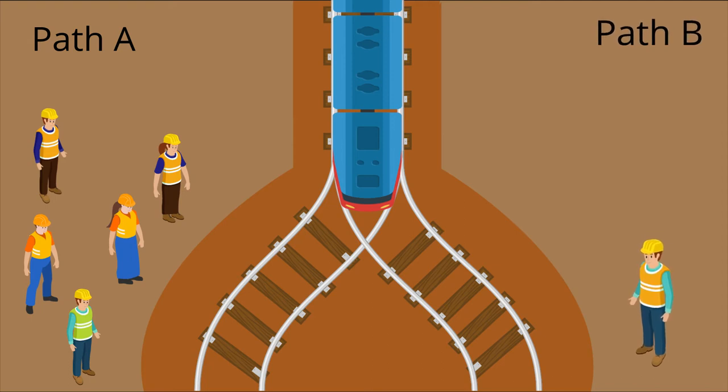The classic trolley problem involves deciding between doing nothing and letting a train kill five people or flipping a switch and redirecting the train to kill one person.